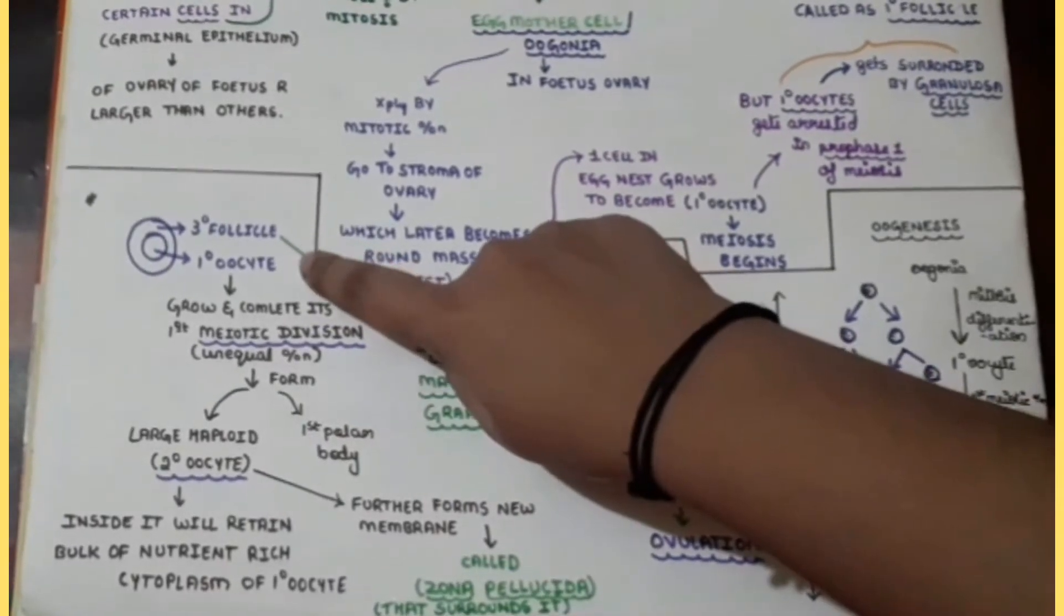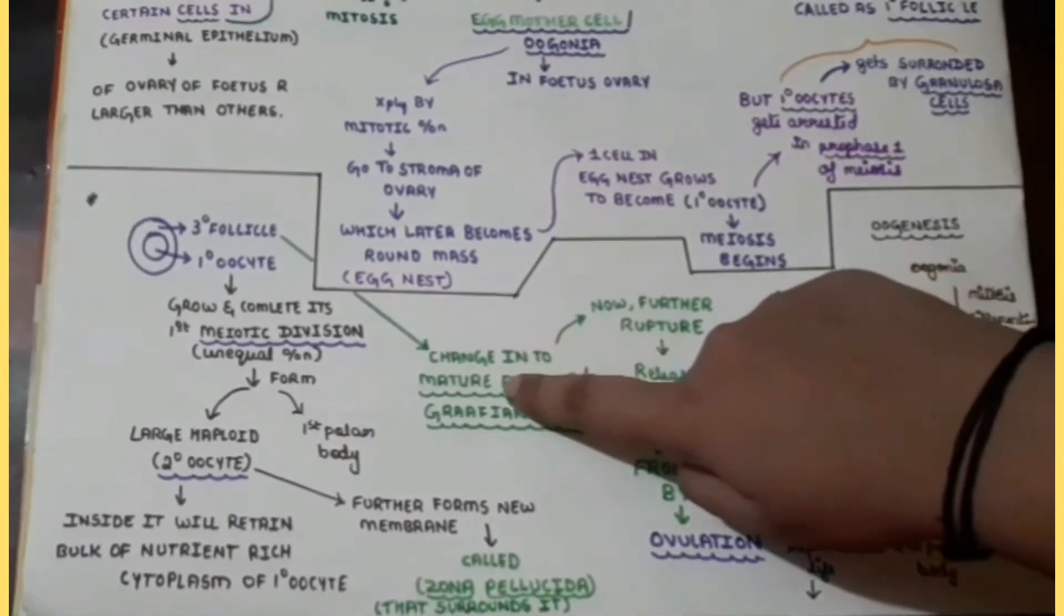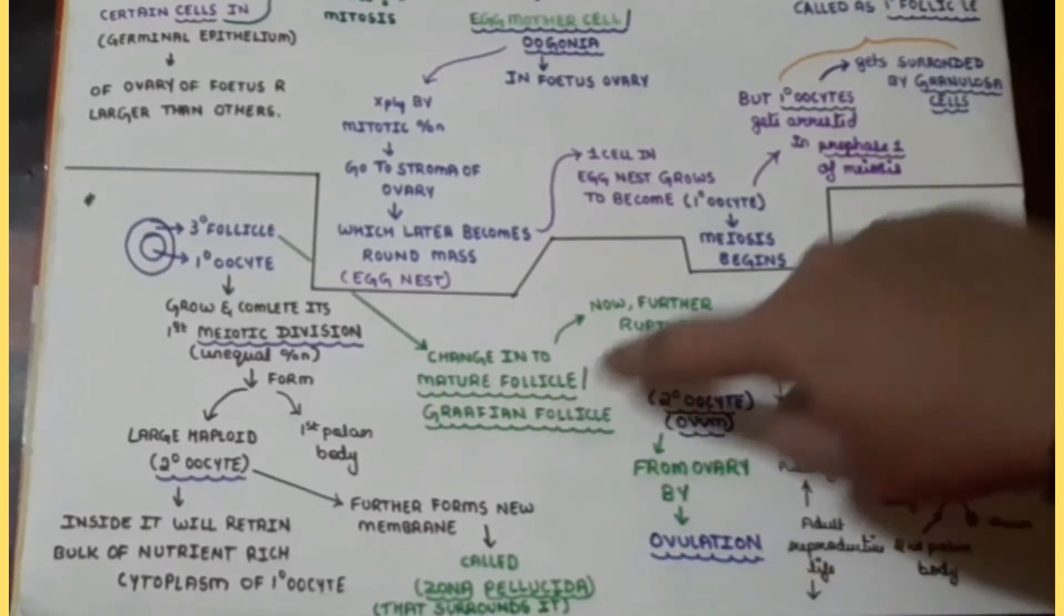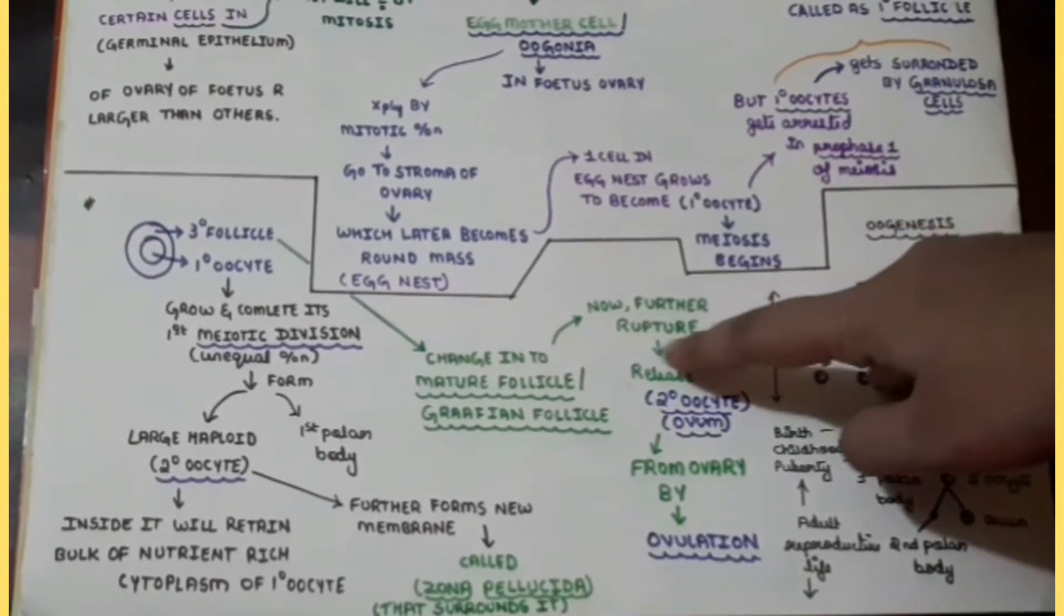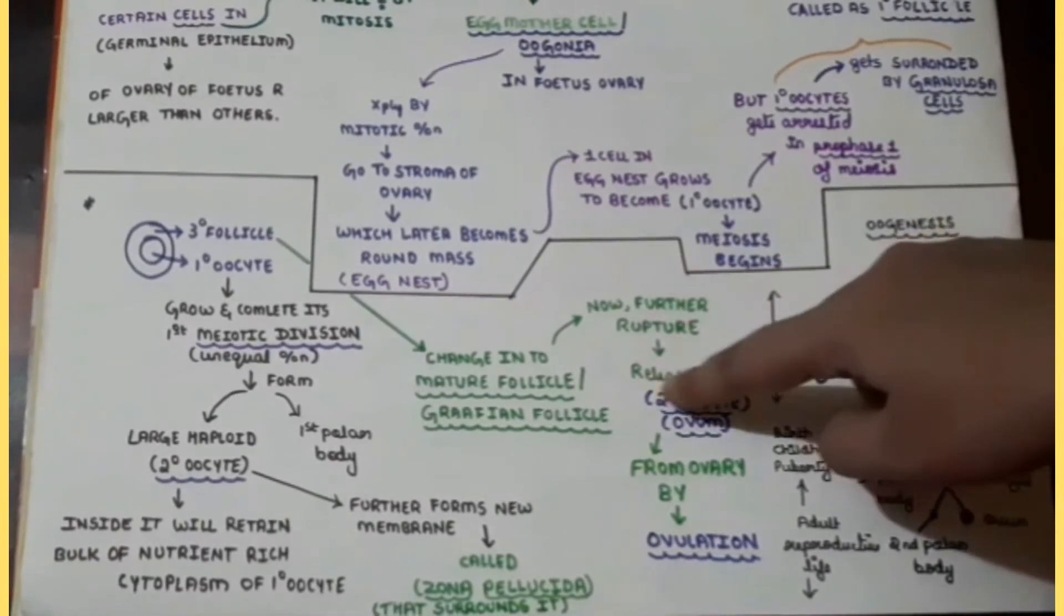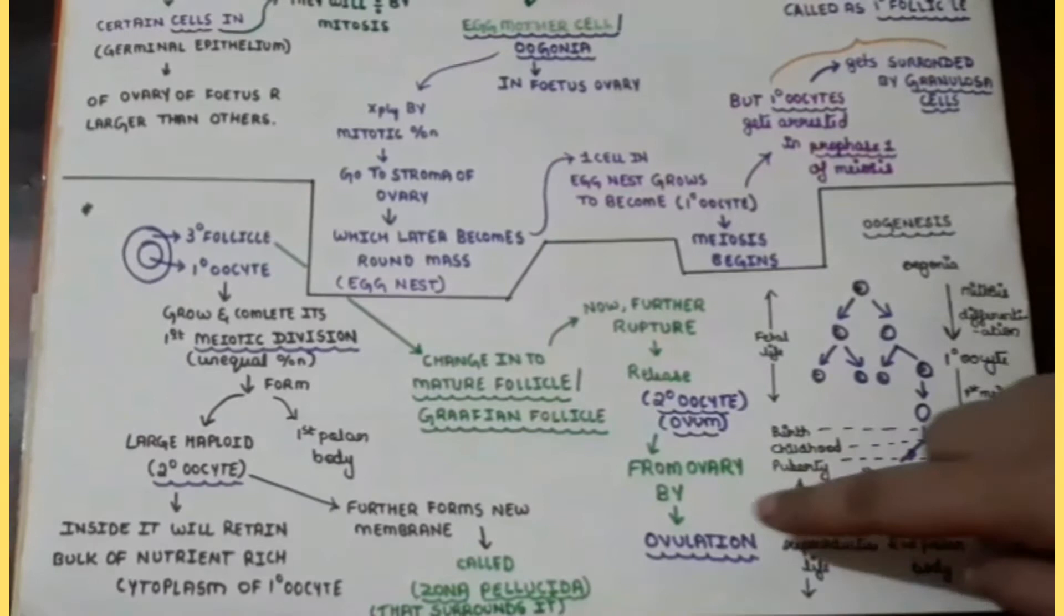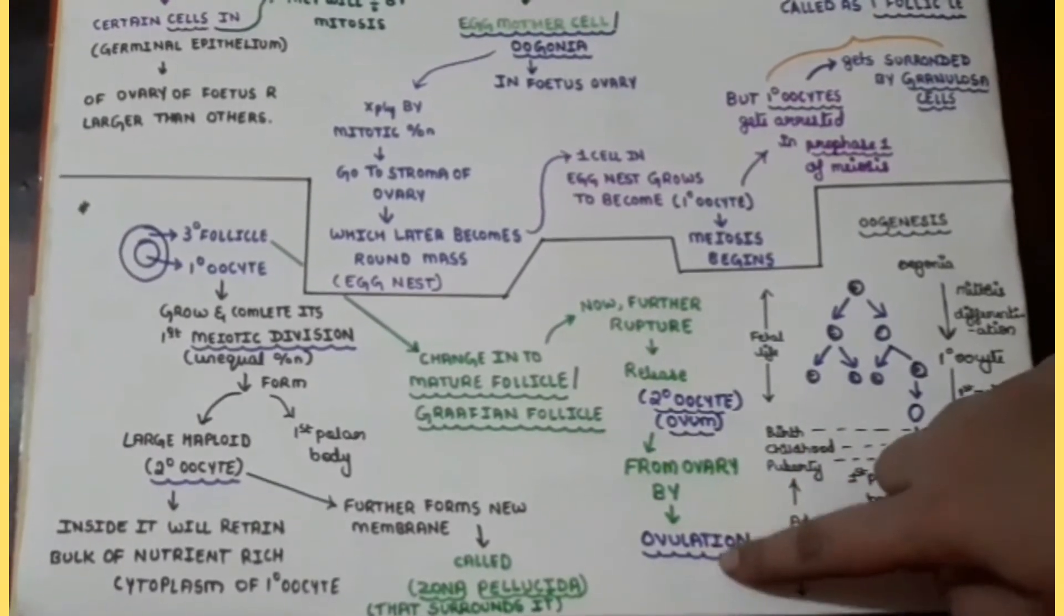This tertiary follicle will change into the mature follicle or you can say the Graafian follicle and now for the future what happens is that it will rupture in order to release the secondary oocyte from the ovary and the process is called as ovulation.